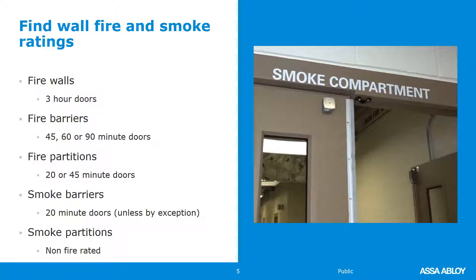Smoke barriers will be a one-hour wall with 20-minute doors unless by exception. Smoke partitions are non-fire rated. Some, based on the occupancy, will have exceptions — you may have smoke barriers in a hospital that do not require positive latching, or doors in a smoke barrier that do not require a door closer, and possibly no fire rating at all. That's why it's important to know the occupancy type and use all of this information together.